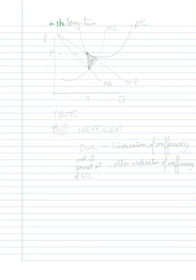In the long term, it then looks like this. MR equals MC. There's my Q. Up to the demand curve to find my price. Total revenue equals total cost. But it is inefficient.